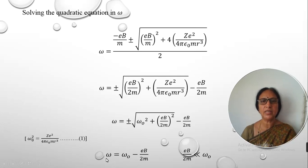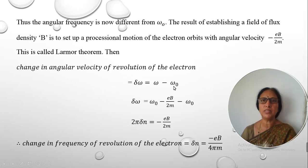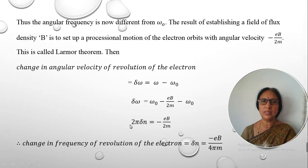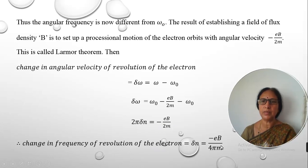We calculate the change in angular velocity as Δω = ω − ω₀. Substituting the expression for ω, the ω₀ terms cancel, leaving Δω = −eB/2m. Expressing ω as 2πn, we write Δω as 2πΔn. The change in frequency of the electron's revolution is therefore Δn = −eB/4πm.